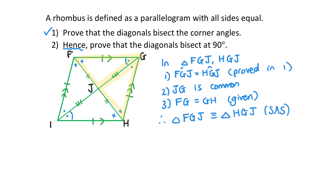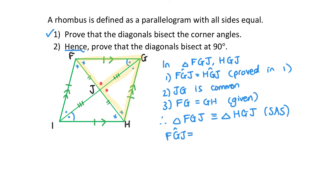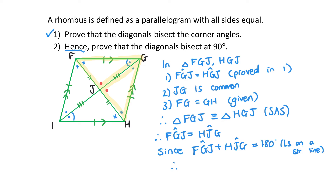Now I want to prove that these two angles are 90 degrees. Since the triangles are congruent, angle FJG equals angle HJG. But since FJG and HJG lie on a straight line, they add up to 180 degrees. Since they're equal, therefore angle FJG equals angle HJG equals 90 degrees. And there I've proved that the diagonals bisect at 90 degrees.